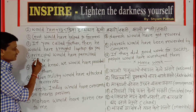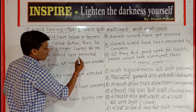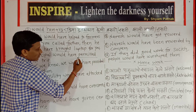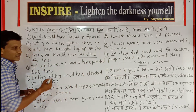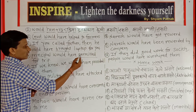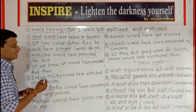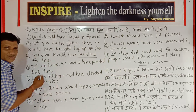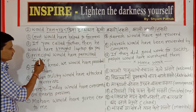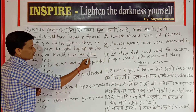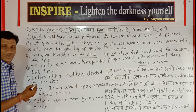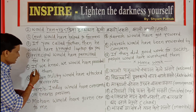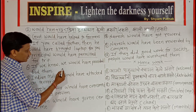Our next sentence is: 'Principal would have permitted for trip.' In Marathi: 'Pracharani shahali karata parvangi dili asti.' Now the negative sentence: 'Principal wouldn't have permitted for trip' — 'Pracharani shahali karata parvangi dili nasti.'